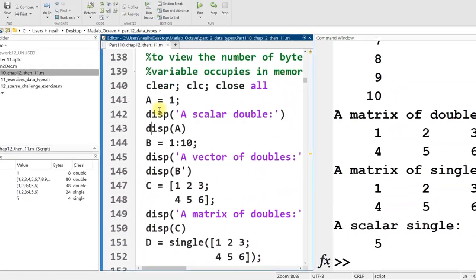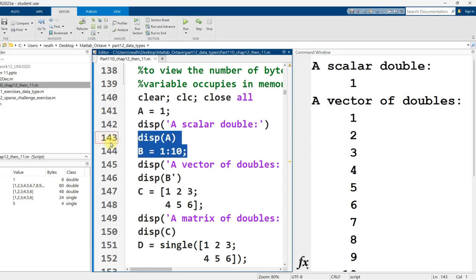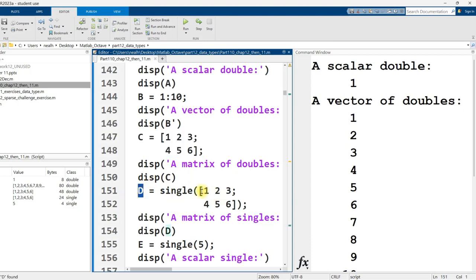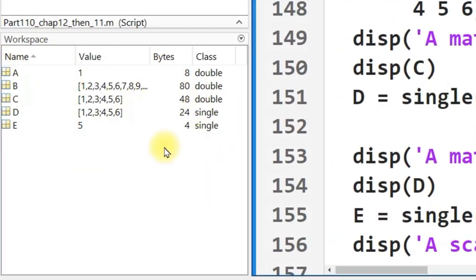Okay, so I've created variables A, B, C, D, and E. A is literally just the number 1. B is a vector of numbers 1 through 10. C is a matrix, two rows, three columns. D is the same matrix, except it's inside this function that says single. And then likewise, E is the number 5, but it's in this function called single. Now, if you bring your attention to the workspace right here, we'll see those five variables. We'll see their values, as many as can fit on the screen at least. And then we'll see how many bytes they occupy.